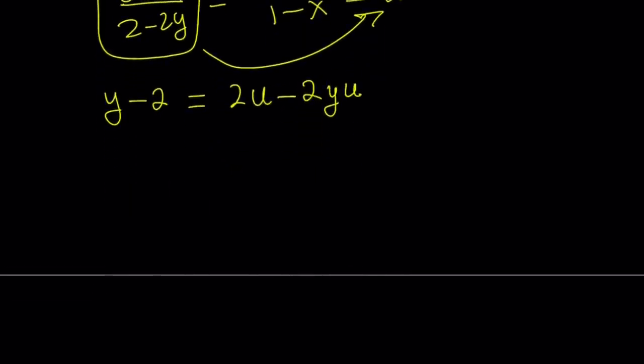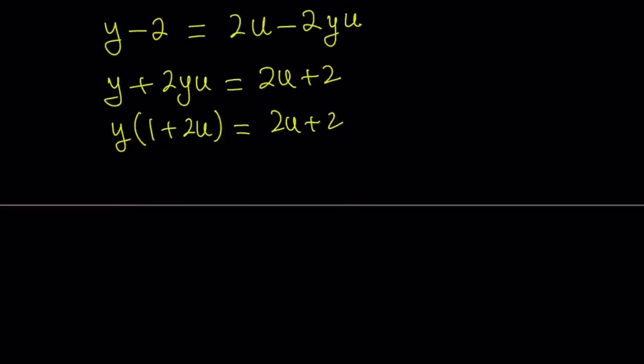If you do cross multiplication, y minus 2 equals 2u minus 2yu. So let's bring the 2yu here and put the 2 on the right-hand side. And then factor out y: 1 plus 2u. One more time: 2u plus 2. And then divide by 1 plus 2u. And that's going to give you y equals 2u plus 2 divided by 1 plus 2u.